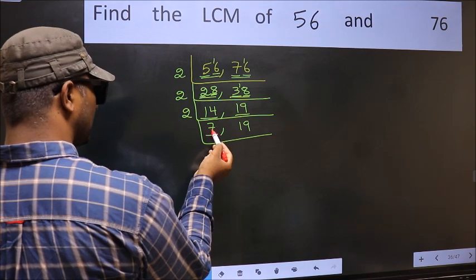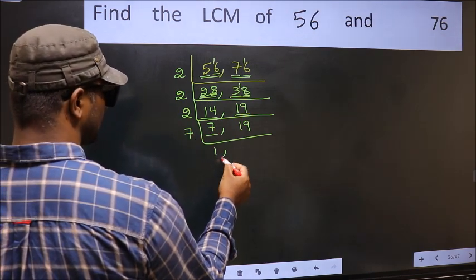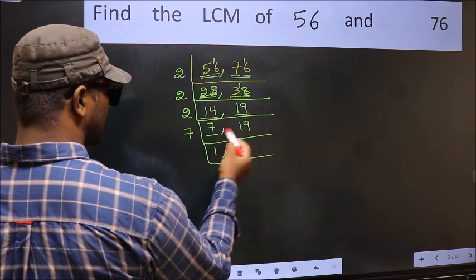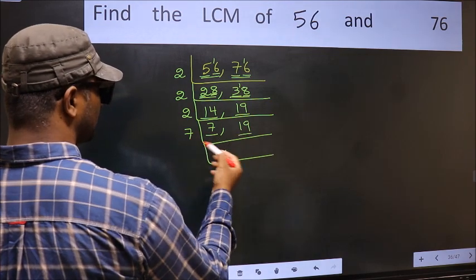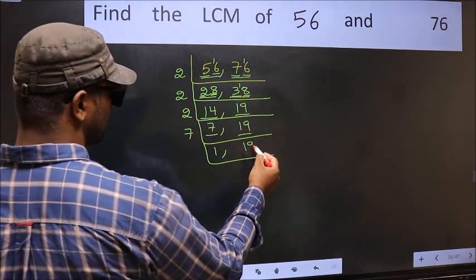Now here we have 7. 7 is a prime number so 7, once is 7. The other number 19 not divisible by 7 so you write it down as it is.